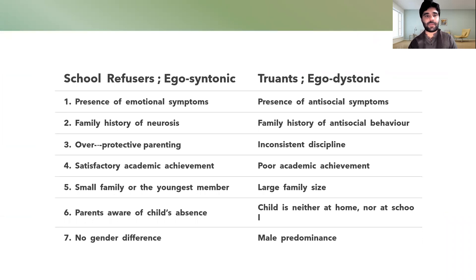In school refusal, it is very important to identify and differentiate school refusal from truancy. In school refusal, the problem is egodystonic, which means that these children are not going to school, but the children are concerned about their absences at school. In truancy, the child is absent from school, but it doesn't bother the child.